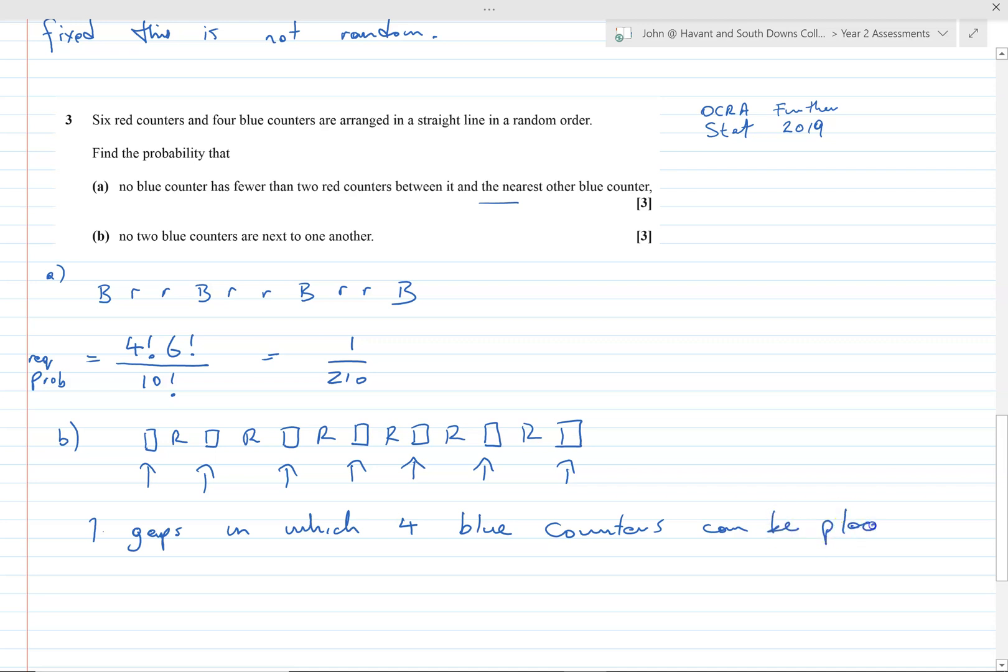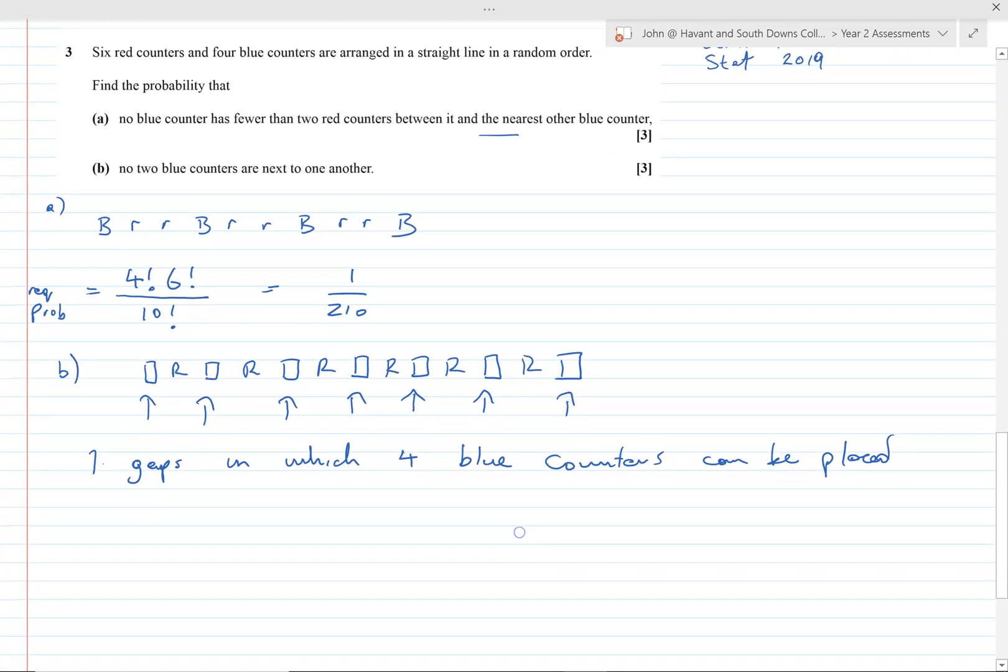So that's the best way to think of it: think of the seven possibilities for the gaps for blue. And then of course if you put the blue in any of those gaps, they won't be, because they're going to be separated by a red. So that should work out fine. So what, don't forget, we're dividing by 10 factorial, which is the total number again. Now the blue ones themselves...